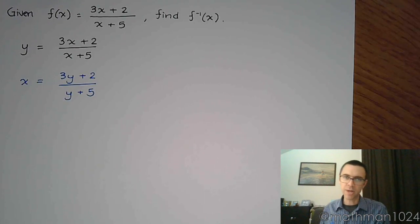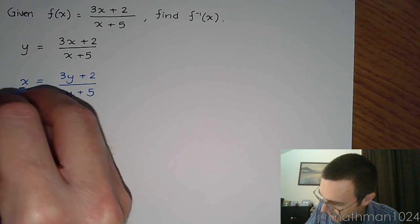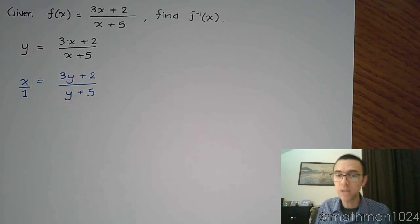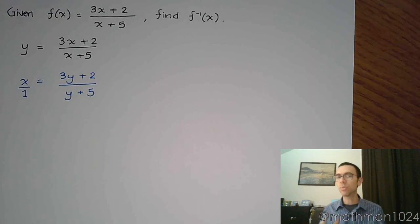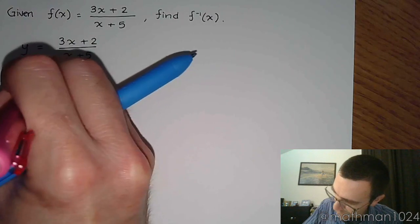Now you see the problem that we're going to have here. We're supposed to solve for y, but we've got y in two different spots. This does make things more complicated, but we've got this. Now if I just write x as x/1, then we're going to be in really good shape, because we now have a proportion, and remember that in proportion the cross products are equal.